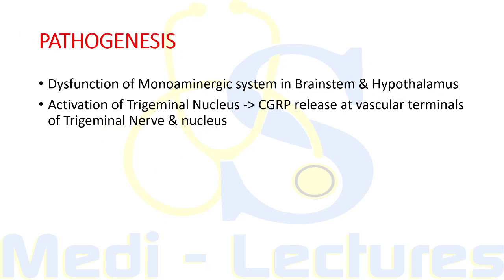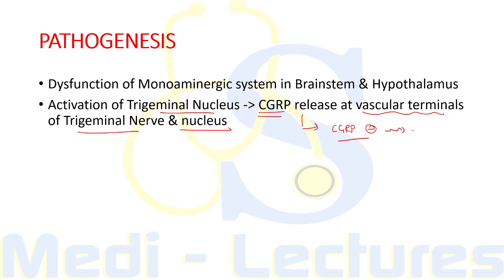There is also activation of the trigeminal nucleus leading to release of vasoactive neuropeptides, especially the role of serotonin and calcitonin gene-related peptide (CGRP) at vascular terminals of the trigeminal nerve as well as the nucleus. Therefore, for treatment of migraine we now have CGRP antagonists, which are termed gepants.